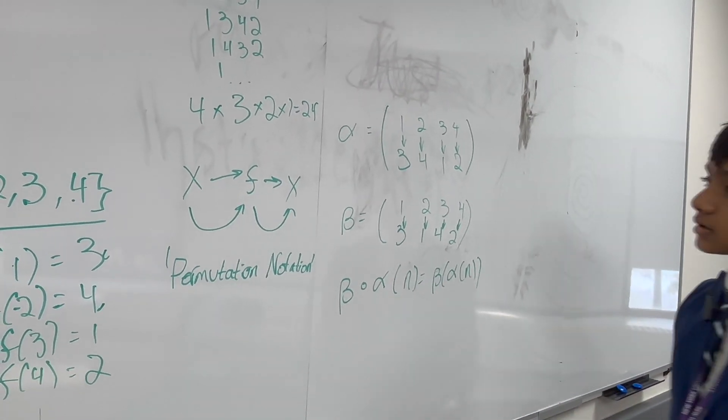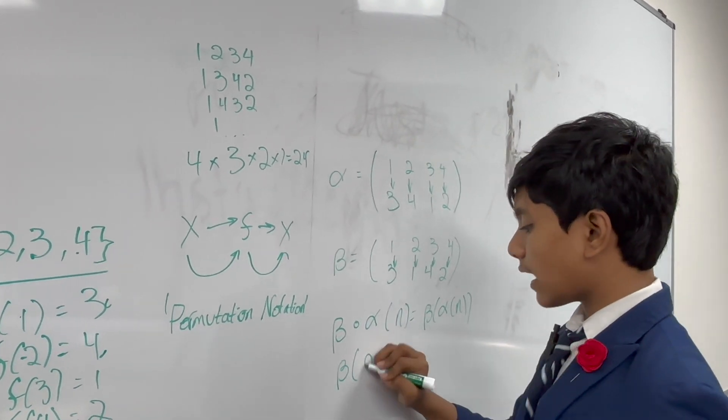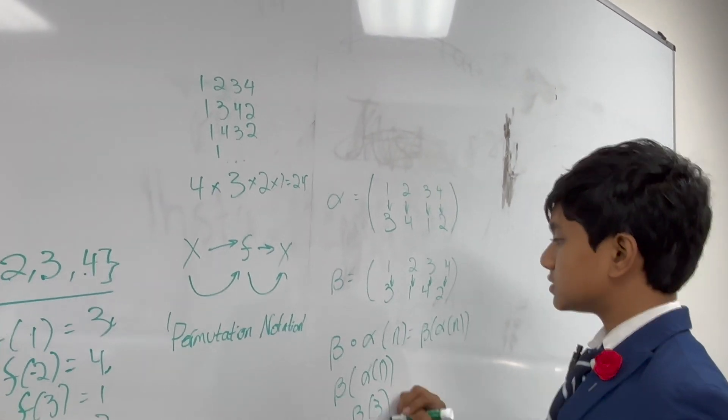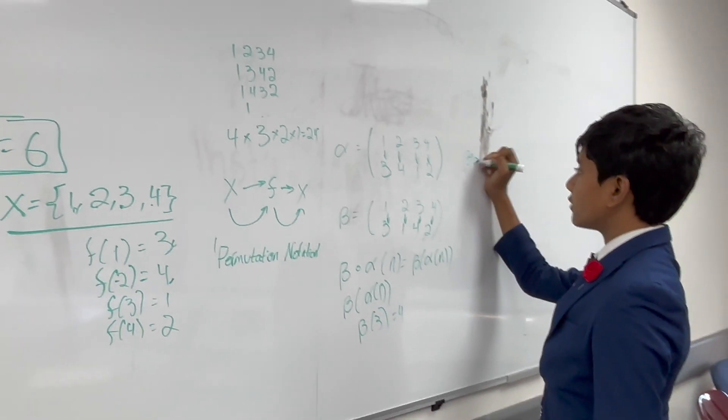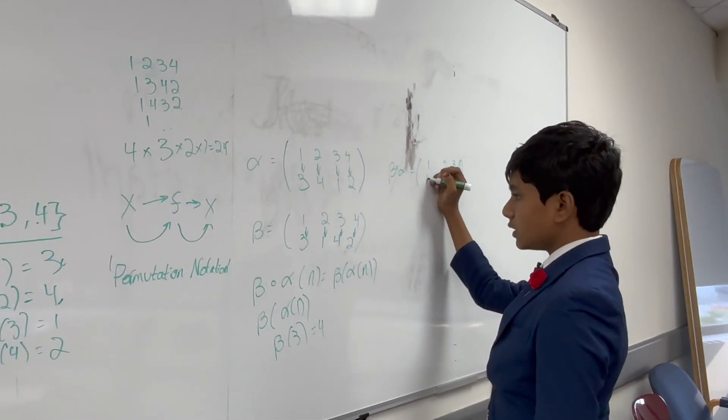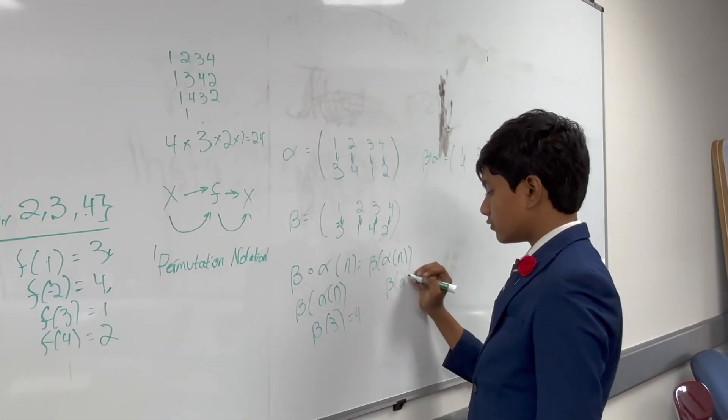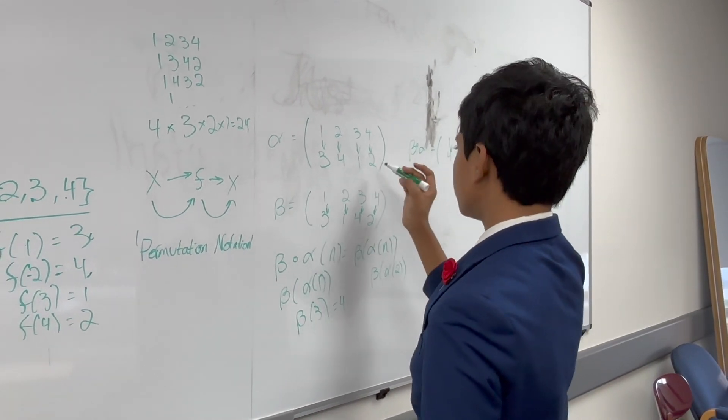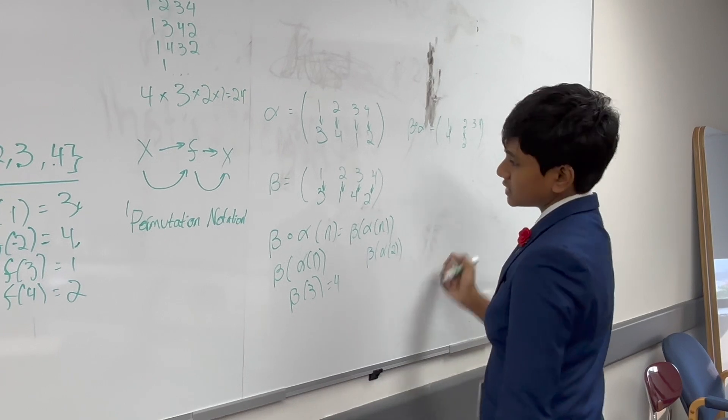So, what would that look like? Well, let's try plugging in 1 first. Beta of alpha of 1. Well, what's alpha of 1? 3, right? And then, what's beta of 3? 4. So, we know beta dot alpha is, we start with 1, 2, 3, 4, and we know 1 maps to 4. Then, what about beta of alpha of 2? Well, beta of alpha of 2, it's just going 2 to 4, 4 back to 2. So, 2 maps to itself.